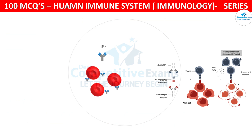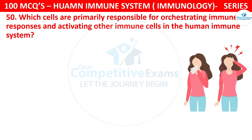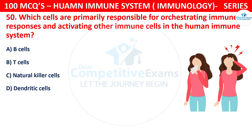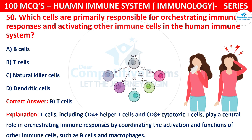Question number 50. Which cells are primarily responsible for orchestrating immune responses and activating other immune cells in the human immune system? The options are B cells, T cells, natural killer cells, or dendritic cells. The correct answer is B, that is T cells. T cells — including CD4+ helper T cells and CD8+ cytotoxic T cells — play a central role in orchestrating immune responses by coordinating the activation and function of other immune cells such as B cells and macrophages.